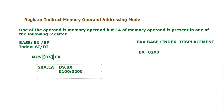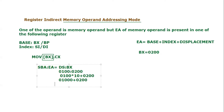If we calculate: DS value 0100 is multiplied by 10, giving 01000, plus BX value 0200. Adding them gives the physical address 01200. So 01200 is the physical address of the location we are talking about in this instruction.